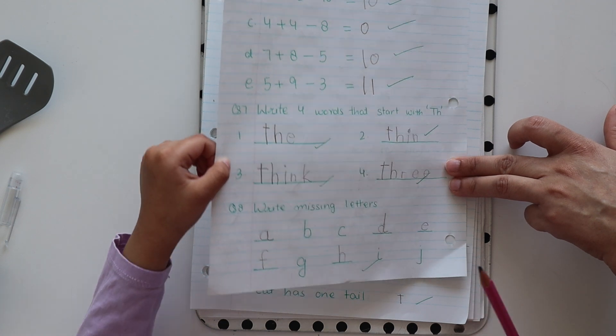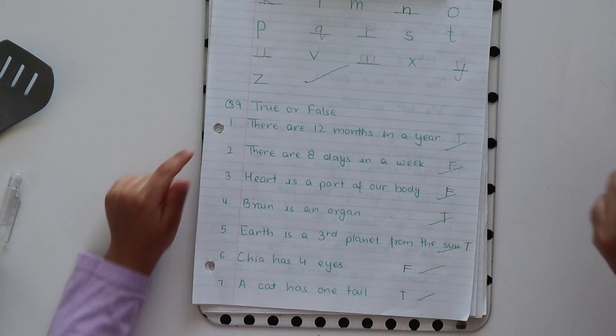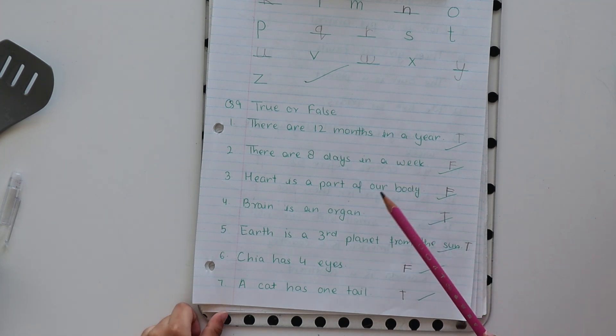Write missing letters and the back of it. Yeah, we already did that. Yeah. So these are missing letters. And true or false. Very nice. You have to read. Listen. You have to read all these.